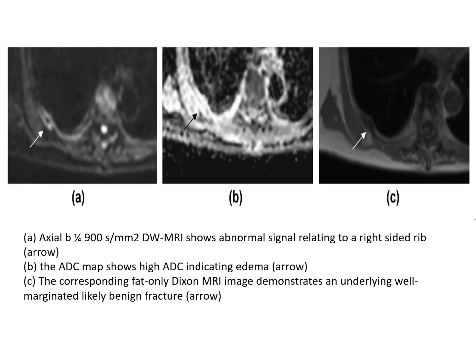Diffusion and Dixon imaging run complementary to each other. It is important to distinguish benign from malignant fractures, because benign fractures will not show true restricted diffusion while malignant fractures will. In this example, image A shows hyperintense signal related to a right-sided rib. Image B shows hyperintensity on the ADC map, signifying edema. Image C, the corresponding fat-only Dixon MRI image, demonstrates an underlying well-marginated, likely benign fracture.